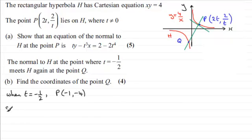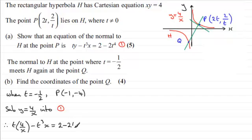Now, I'm going to substitute our equation, that was y equals 4 over x, into the equation of the normal which we found out in Part A. Let's say we call that equation 1. So substitute that into equation 1. And what do we get? Well, we're therefore going to get t times y, which is 4 over x, so t times 4 over x, and then we've got minus t cubed x equals 2 minus 2t to the 4.